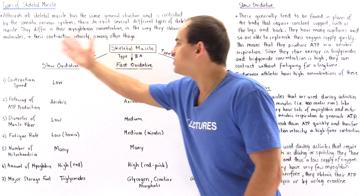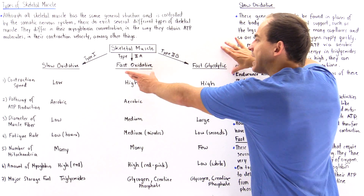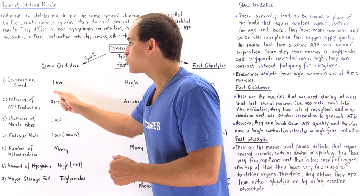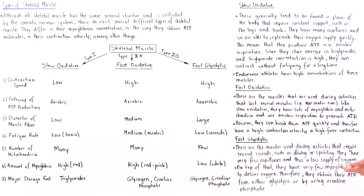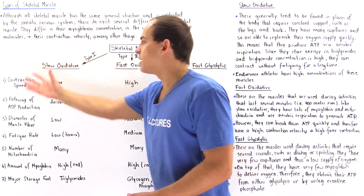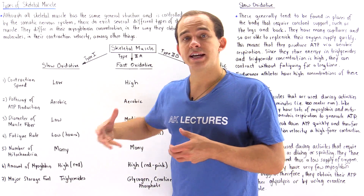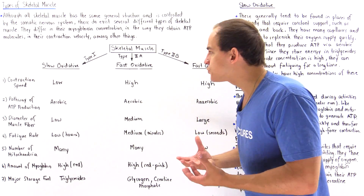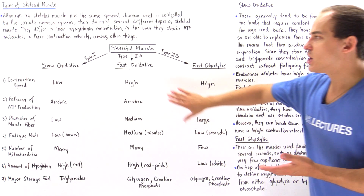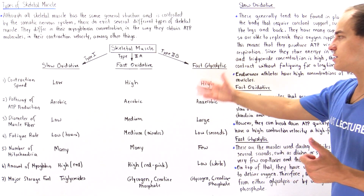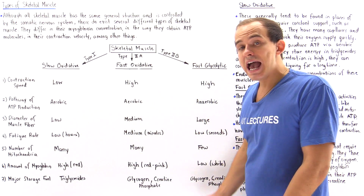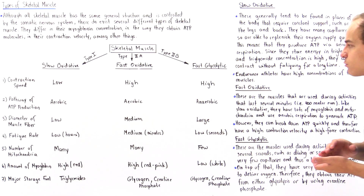Because fast glycolytic muscles don't have too many capillaries or too much oxygen, they don't have many myoglobin carrier proteins, and so these muscles appear white — they are known as white muscles — while the other two types are known as red muscles. Type 2A and 2B are fast twitch muscles, while Type 1 has a low contraction speed and is known as a slow twitch muscle. Type 1 muscles are found predominantly in the back and legs, supporting our body posture with their low fatigue rate. Type 2B muscles are used when we need to exert a very large force, such as lifting a very heavy weight for several seconds.